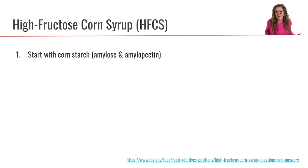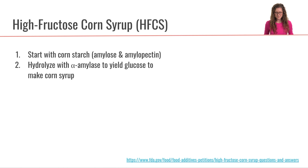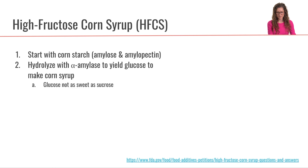Let's talk about how we make high fructose corn syrup. We start off with corn starch. Starch is composed of amylose and amylopectin — many glucose units all bound together. We take that amylose and amylopectin and hydrolyze it with alpha-amylase to yield a whole bunch of individual glucose units, and that is how we make the corn syrup.